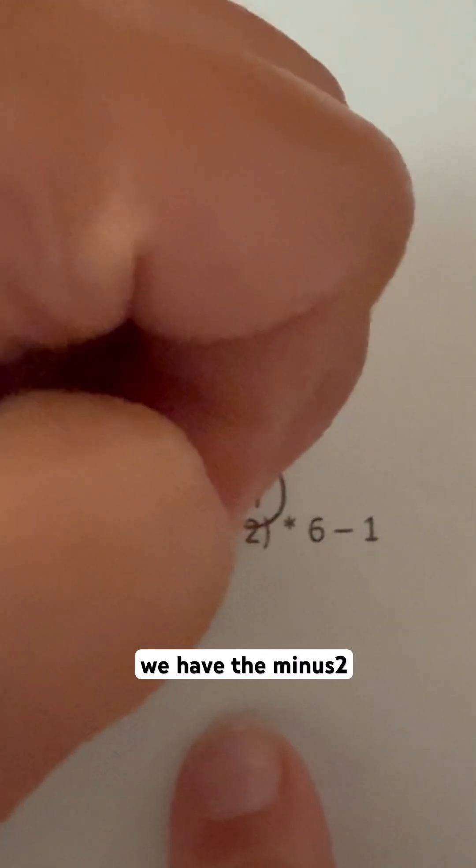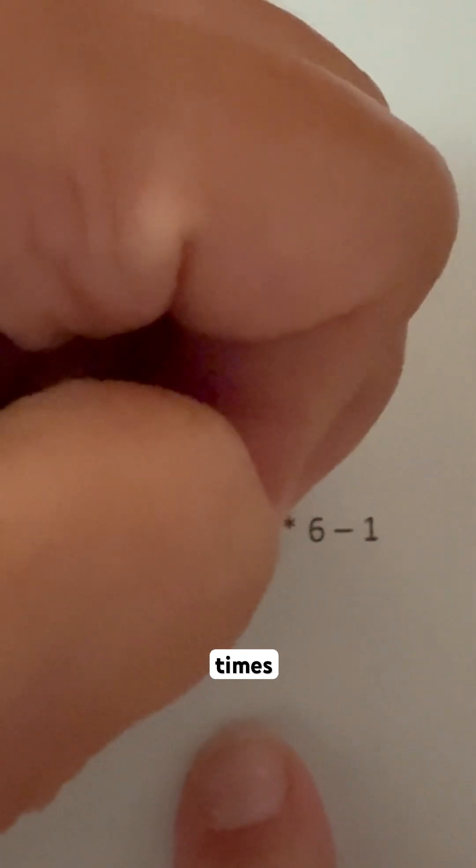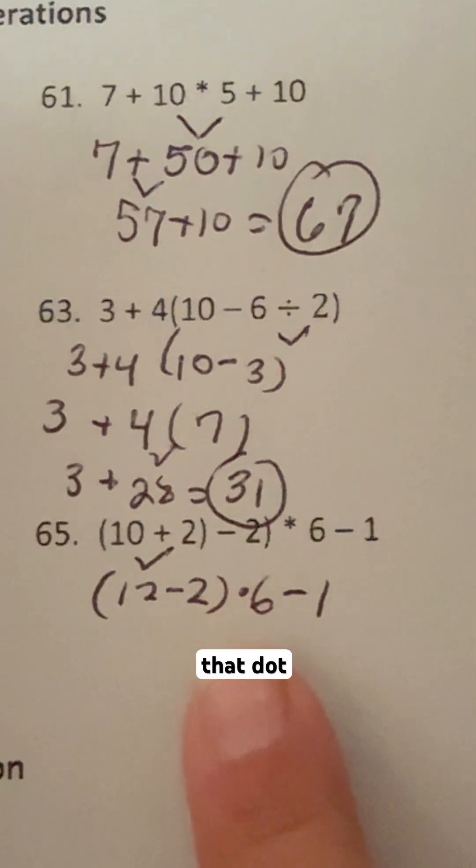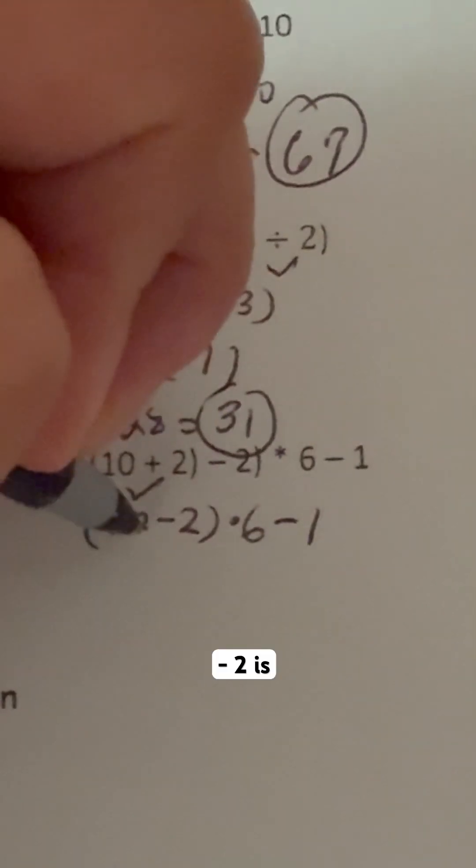Then we have the minus 2, and then it's times 6. I don't know why this time they did the 6 like that, but that's fine. Whether that dot is here or the star, in this case, is here or it's not, it still means multiplying. So 12 minus 2 is 10.